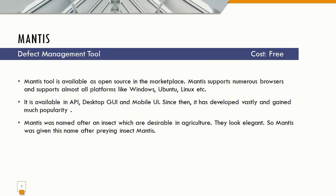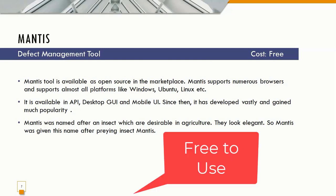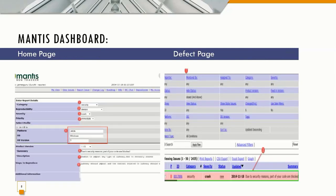Mantis supports sub-projects and categories. Reported bugs can be exported to CSV or Excel files, and it offers the option to integrate with third-party plugins to track time required for a specific project. The name 'Mantis' is named after the praying mantis insect. The main page of Mantis allows you to report defects using categories like reproducibility, severity, priority, platform, OS, and operating system version. Searching defects is simple with filter options, and it is completely free of cost.